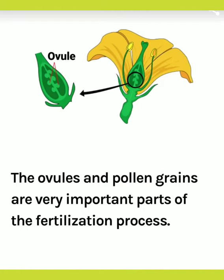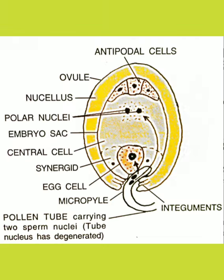Next is the ovule, which is found in the inner part of the ovary. Each ovule has one or two protective coverings called integuments. The integuments leave a small opening called the micropyle at one end for the entry of the pollen tube. These integuments are enclosed by the nucellus, which is a mass of food-laden cells. And further inside the nucellus is the embryo sac.